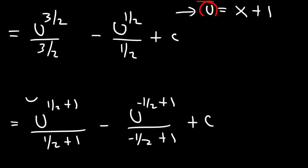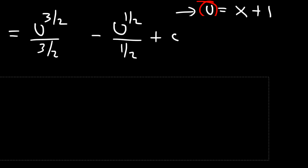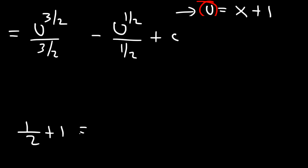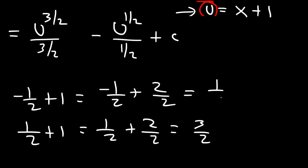And if you want to see the work for that, here's what you can do. So 1 half plus 1. 1, you can write that as 2 over 2, and then just add the numerators. 1 plus 2 is 3, and so that gives you 3 over 2. And for the other one, negative 1 half plus 1, that's negative 1 half plus 2 over 2. And negative 1 plus 2 is 1, so you get 1 over 2.